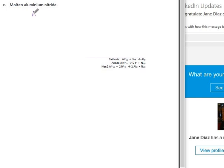Aluminum nitride, if you break it into ions, gives you aluminum ions and nitrides which are minus three.